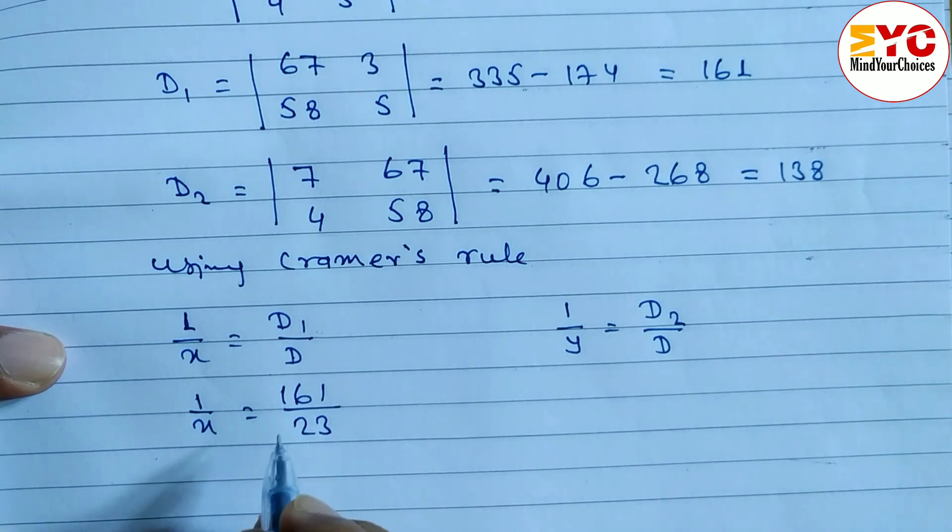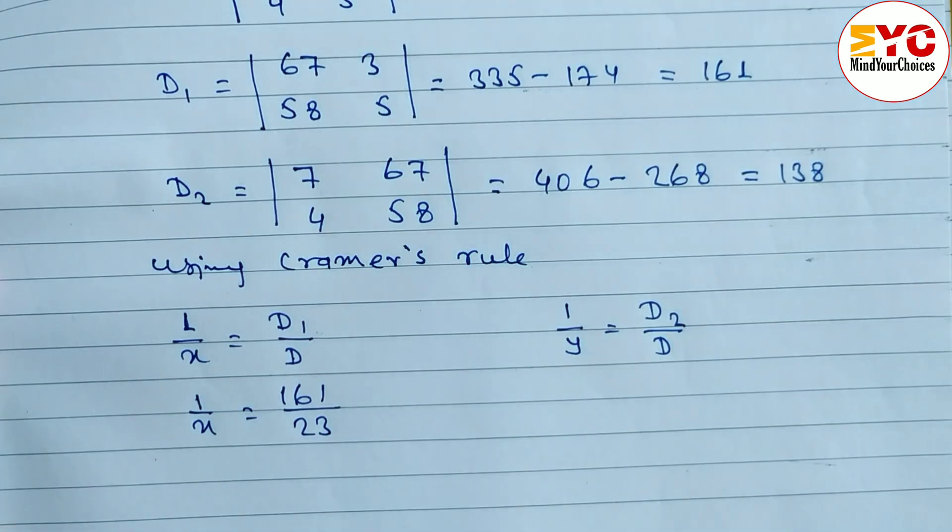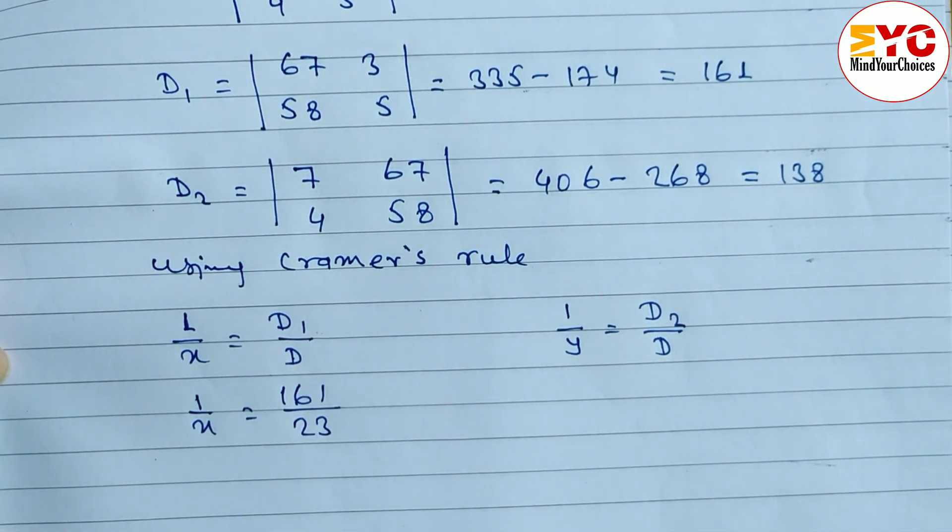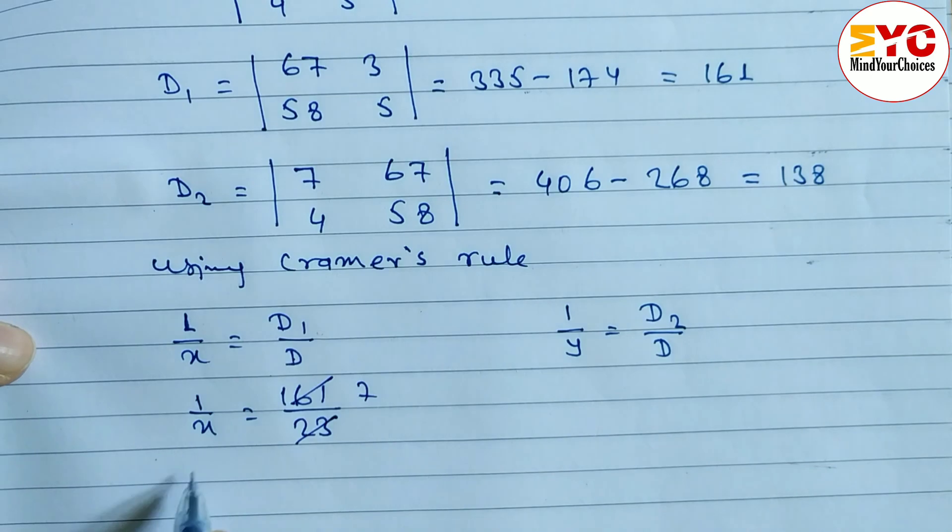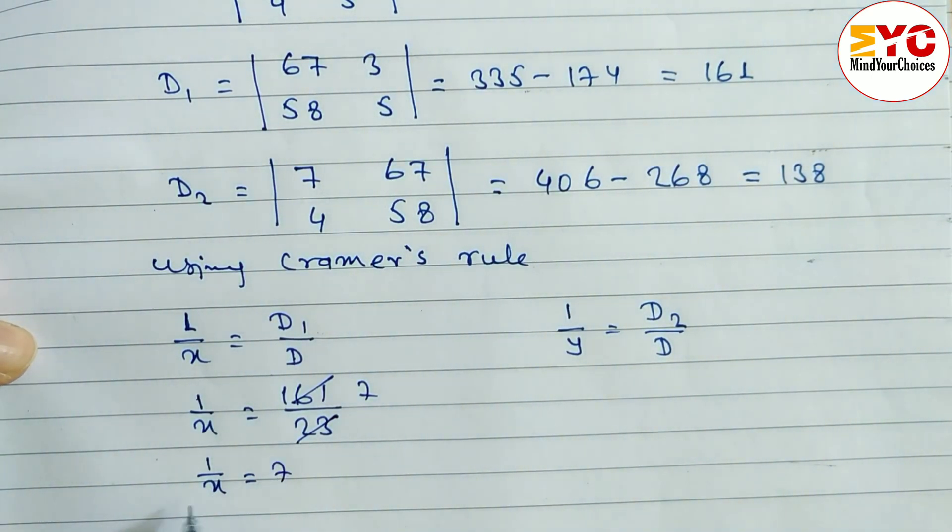Can we reduce this? Yes. By 7 we can reduce. 7, 3 is of 21. 7, 2 is of 14. And 3, 16. Yes, 7. By 7. So 1 by x is equal to 7.